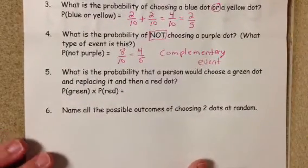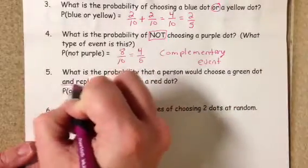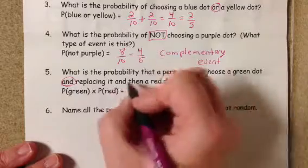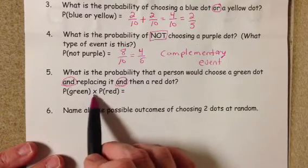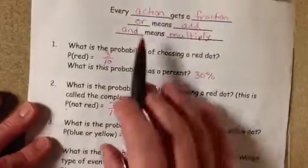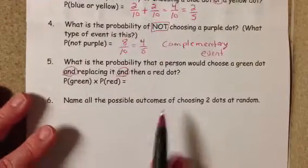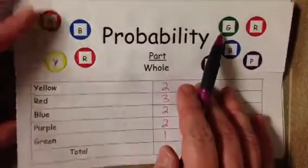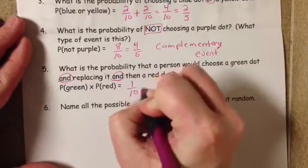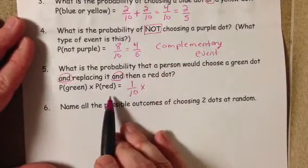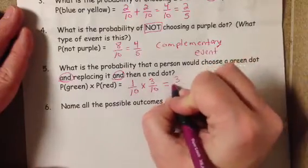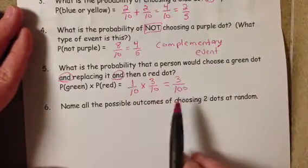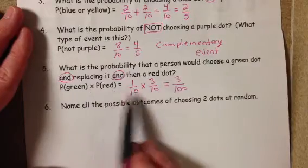What is the probability that a person could choose a green dot, replace it, and then choose a red dot? That's the probability of green and then the probability of red — and it says to multiply, because 'and' means multiply. The probability of getting a green dot: there's only one green out of ten, so that's one out of ten. We multiply by the probability of getting a red dot: three out of ten. One times three is three, ten times ten is one hundred. So the probability is three out of one hundred.